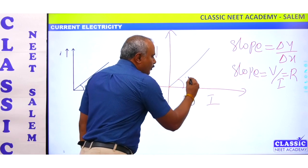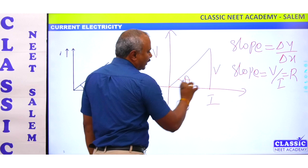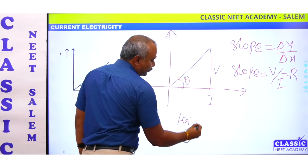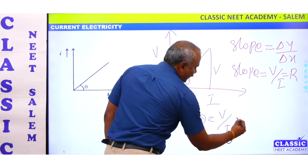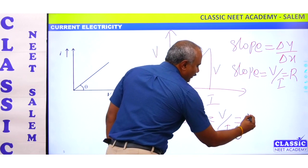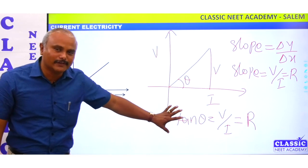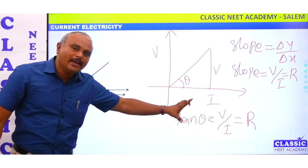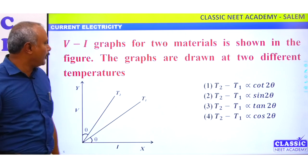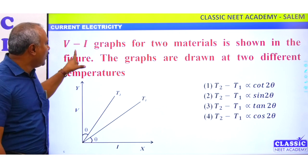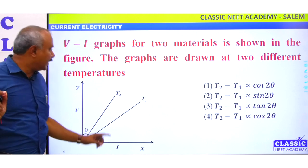If we put an angle on this and transfer V here, what is the slope? Tan theta equals V by I. So tan theta equals resistance. Now let's look at this problem. This problem is voltage-current graphs.